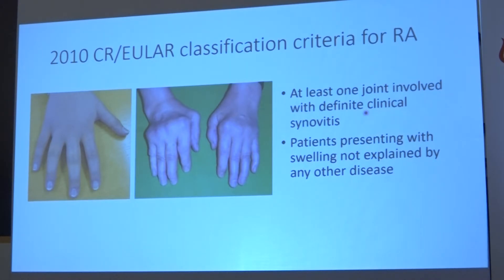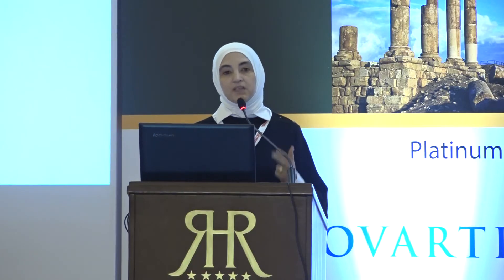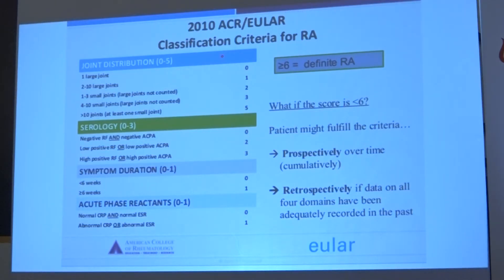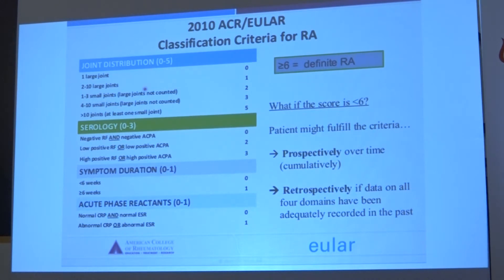To enter the 2010 EULAR criteria, you need at least one swollen joint not explained by any other cause — you cannot have only arthralgia and say the patient has definite rheumatoid. The criteria has four main domains: joint distribution, serology (RF and anti-CCP), symptom duration, and acute phase reactants (ESR and CRP). You examine the patient, sum the points, and if you reach more than six points, this is definite rheumatoid arthritis. More small swollen joints, higher RF or anti-CCP titers, longer duration, and higher ESR and CRP all yield higher scores.